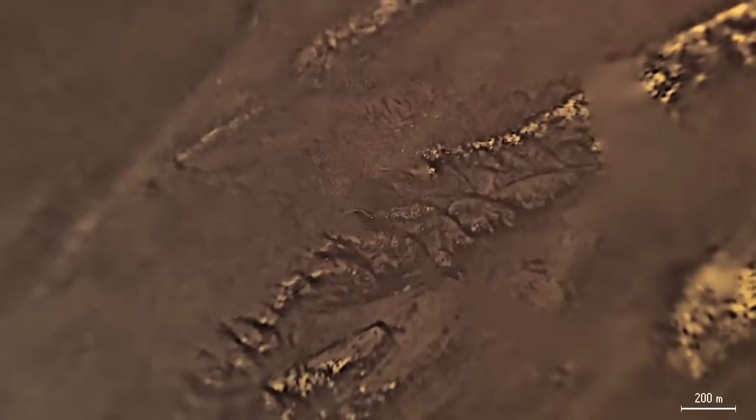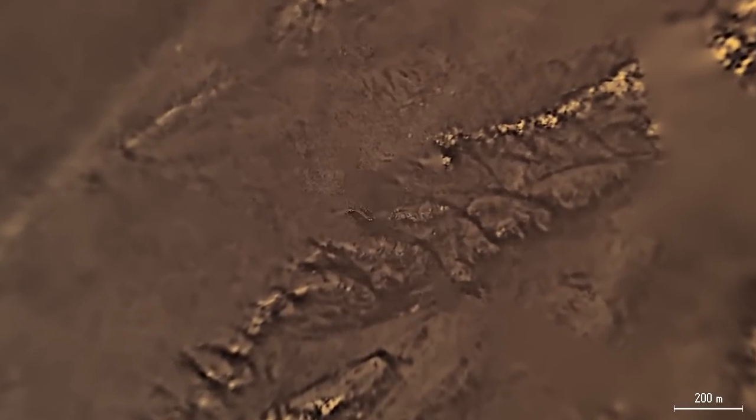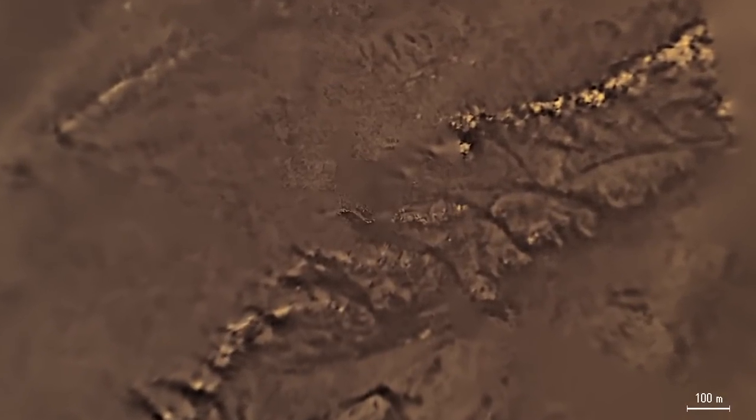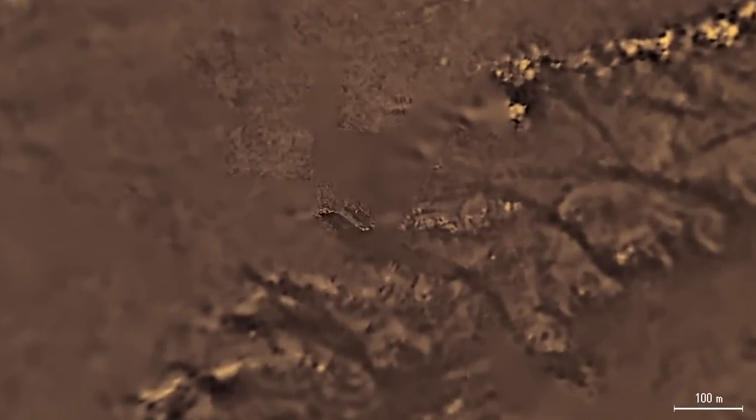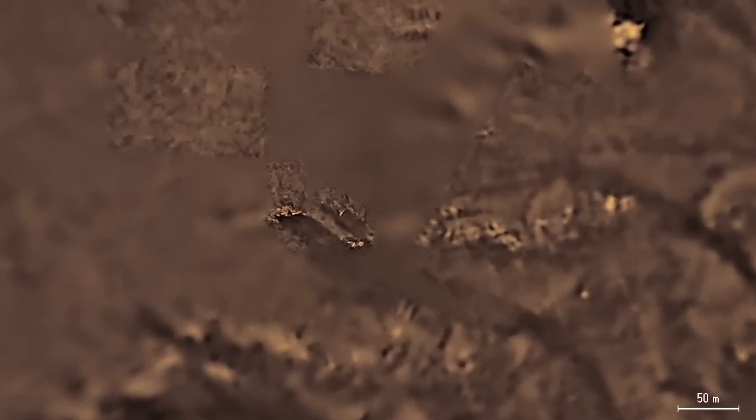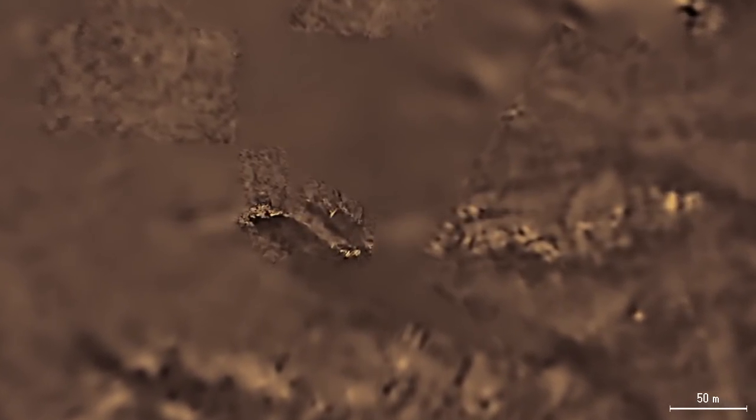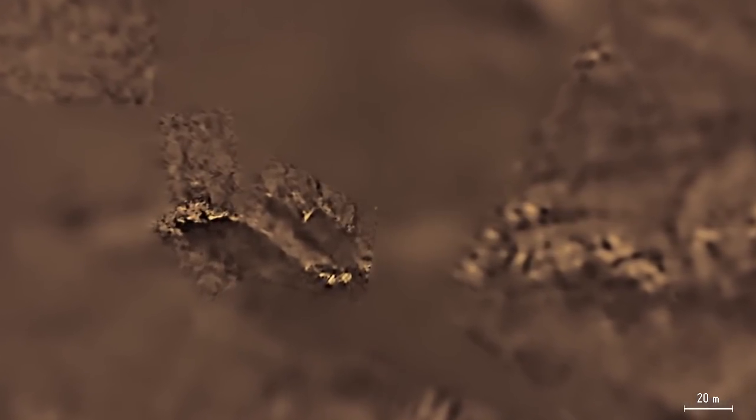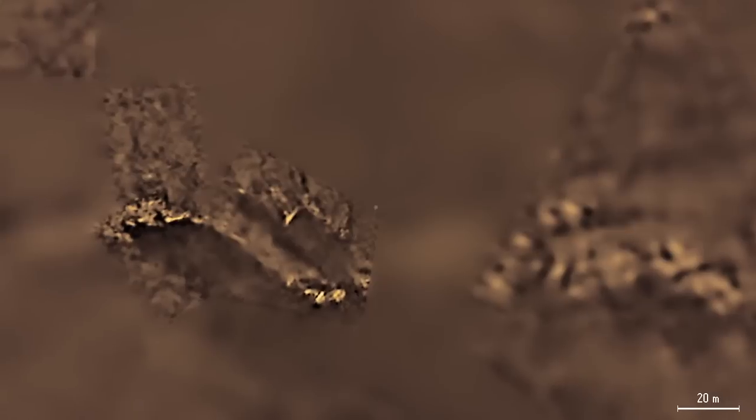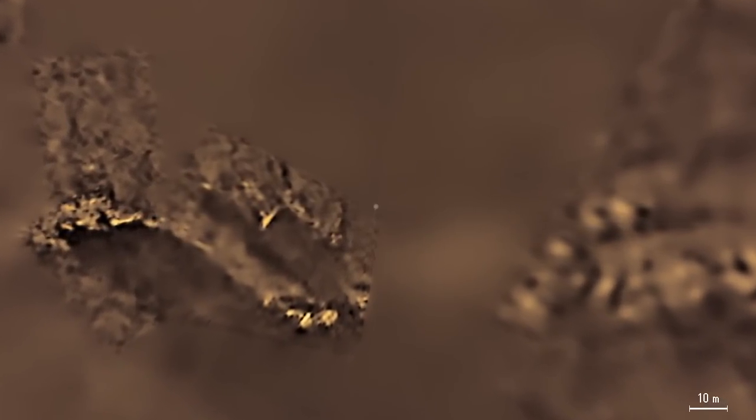Some regions were imaged with high resolution just before Huygens landed on Titan, especially the area to the west of the landing site. Most of Titan's surface is covered by dark organics that are produced in the atmosphere and slowly settle down. The bright spots may be exposed patches of water ice. The white dot in the center of the image is the landed Huygens probe.